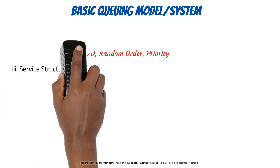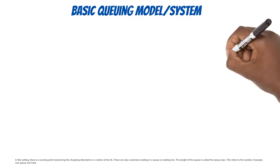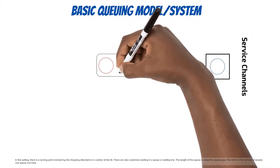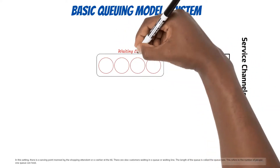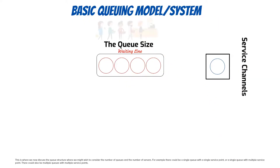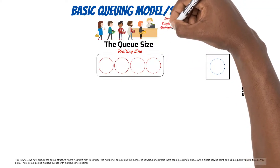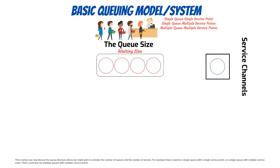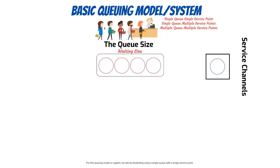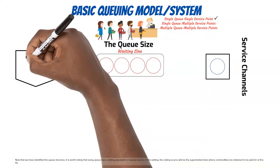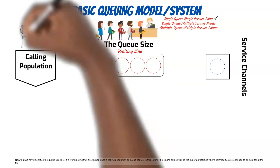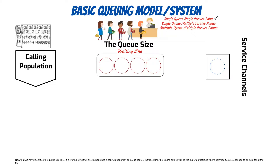Having identified the main components of a queue, let's illustrate what one looks like using a supermarket setting. In this setting, there is a serving point manned by the shopping attendant or a cashier at the till, and there are customers waiting in a queue or waiting line. The length of the queue is called the queue size, referring to the number of people one queue can hold. The queue structure considers the number of queues and the number of servers — for example, a single queue with a single service point, a single queue with multiple service points, or multiple queues with multiple service points. Every queue also has a calling population or queue source.